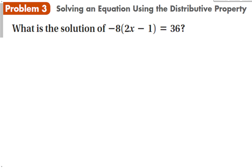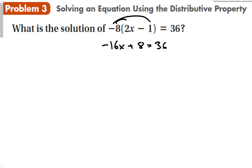Solving the equation using the distributive property. When we have this situation where we have a negative 8 out in front, one way I can solve this is to distribute. I can take this negative 8 and multiply it to both of these. This gives me negative 16x. Negative 8 times a negative 1 is a positive 8, equals 36. Now I have a simple two-step equation that I can solve.